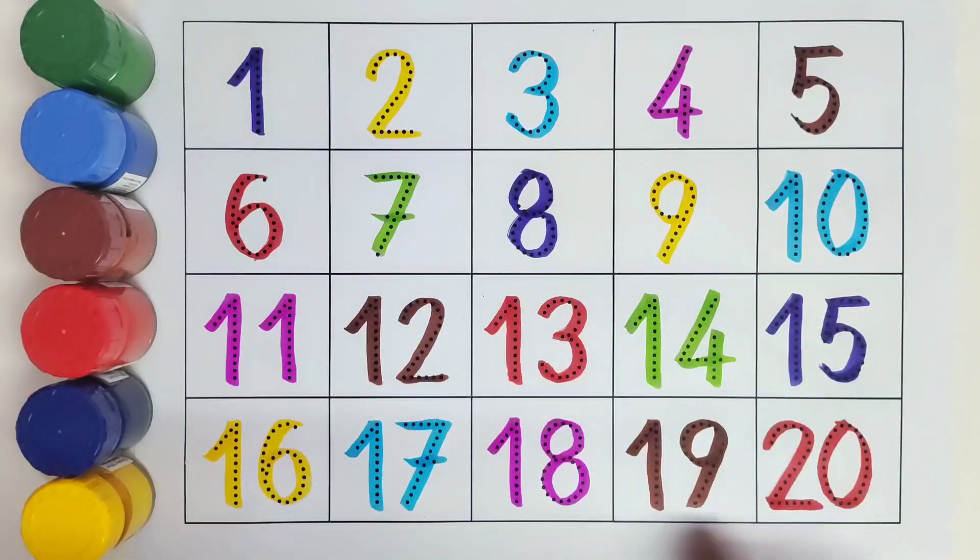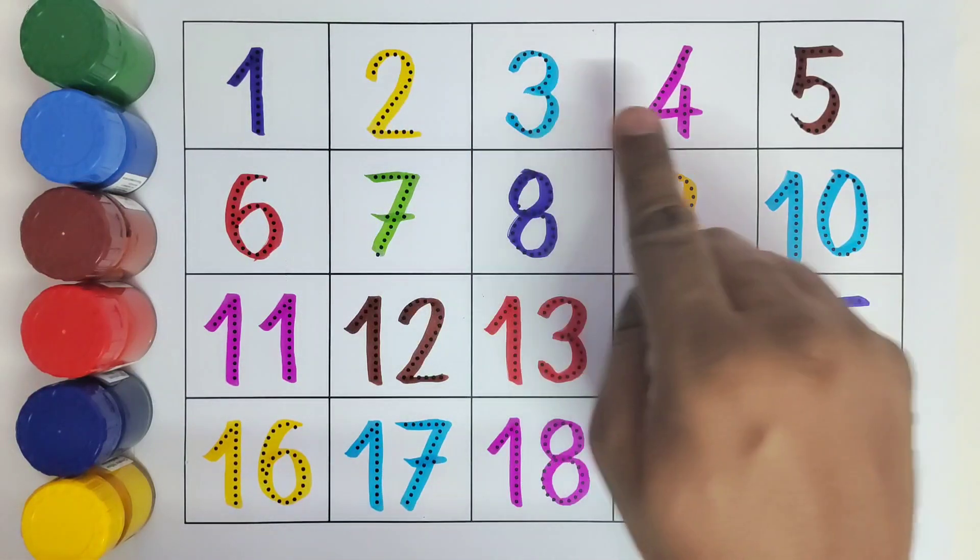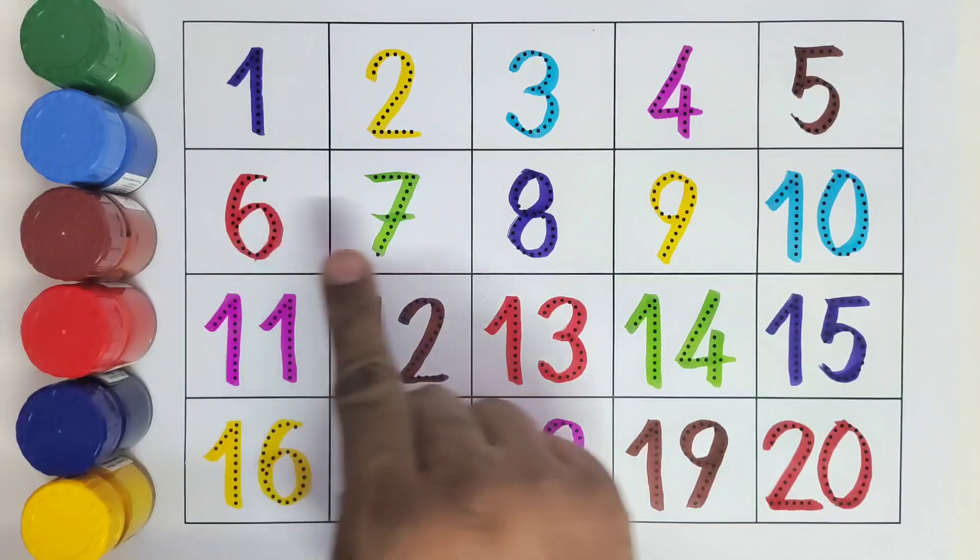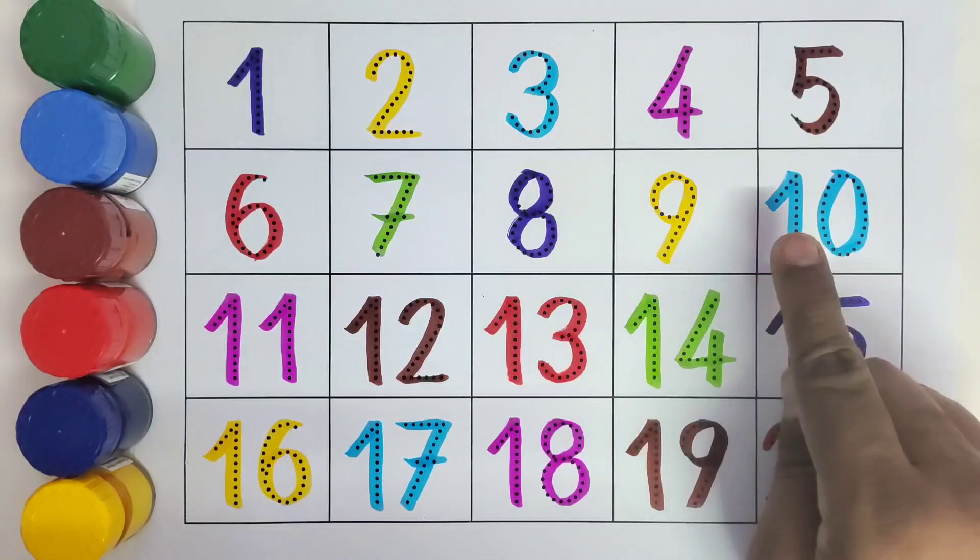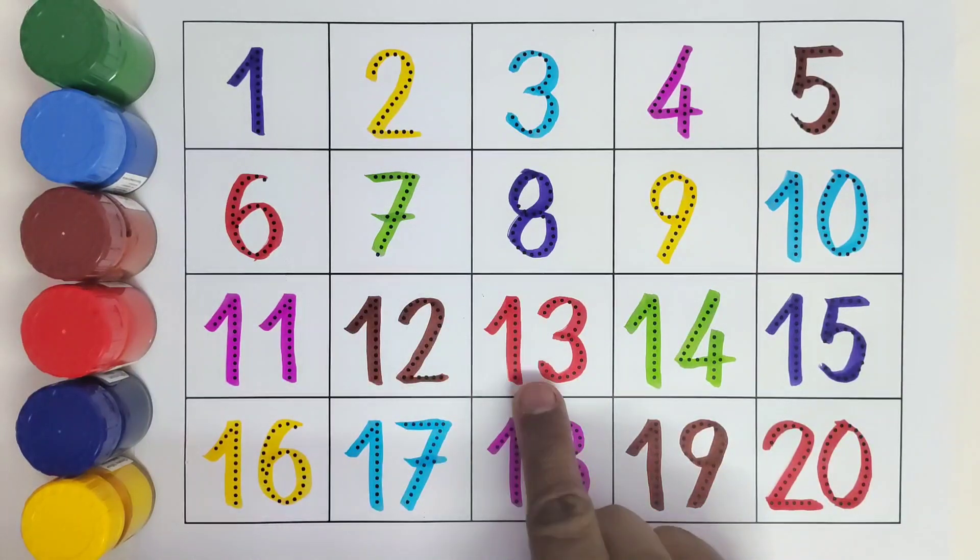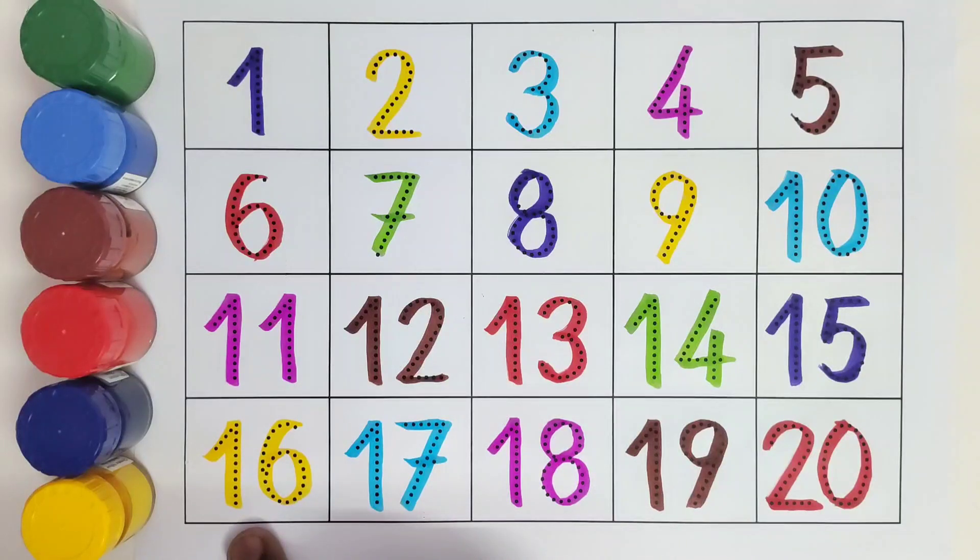I hope you like coloring all these numbers. Let us read them one by one. 1, 2, 3, 4, 5, 6, 7, 8, 9, 10, 11, 12, 13, 14, 15, 16, 17, 18, 19, 20.